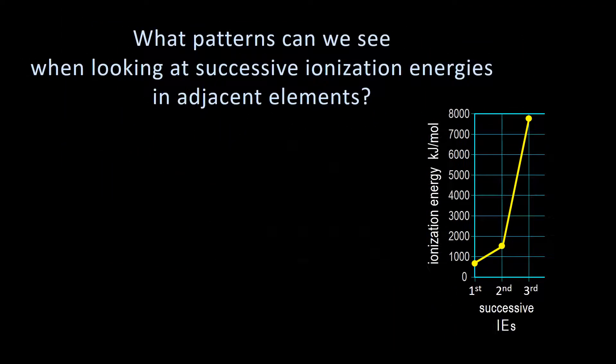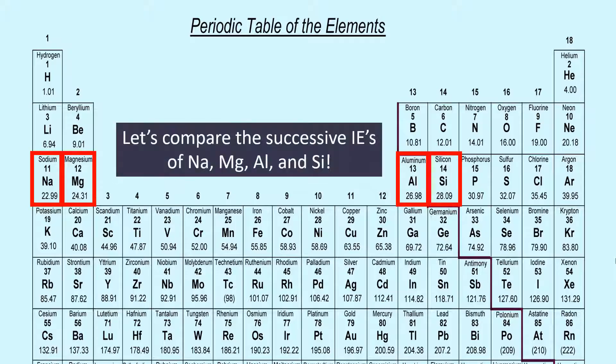What patterns can we see when looking at successive ionization energies and adjacent elements? Let's compare the successive IEs of sodium, magnesium, aluminum, and silicon.